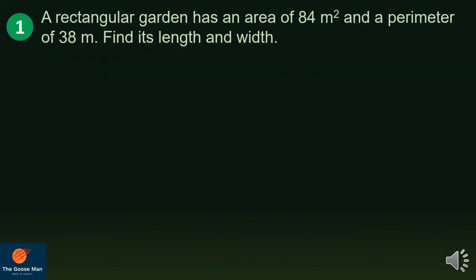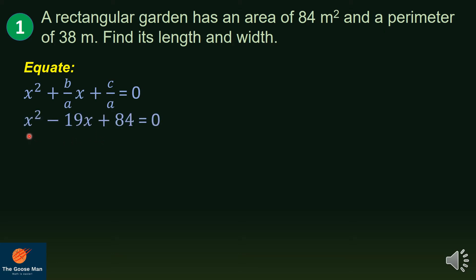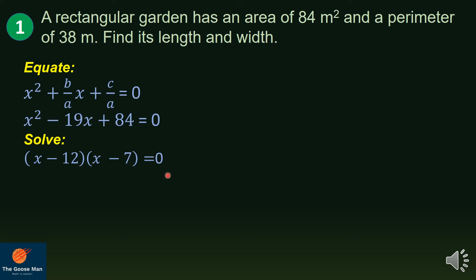To solve, we equate x² + (b/a)x + (c/a) = 0 and substitute the sum and product of the roots. We get x² − 19x + 84 = 0. Now, applying the factoring method from previous lessons, we have x minus 12 times x minus 7 equals 0.